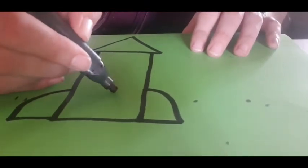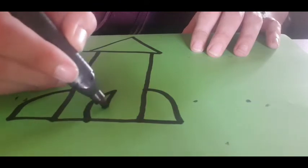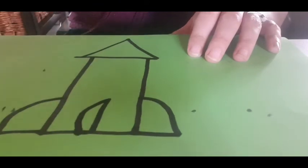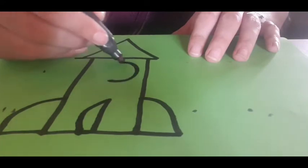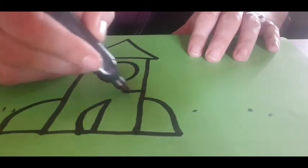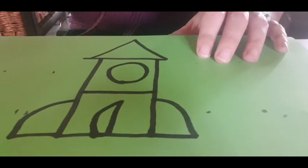And a little crescent type shape for the front, and a circle for the window. And I'm going to decorate my rocket.